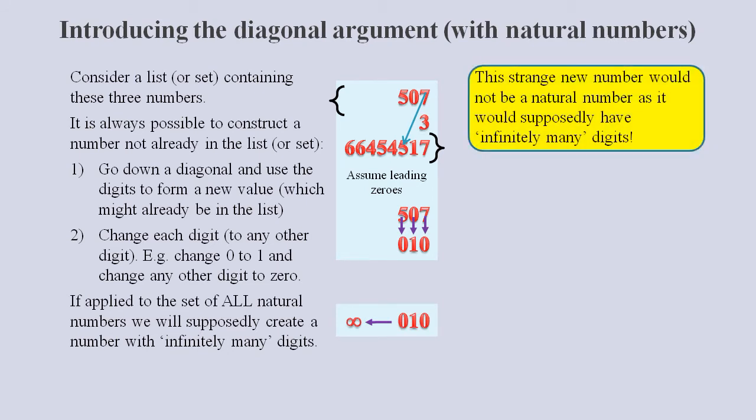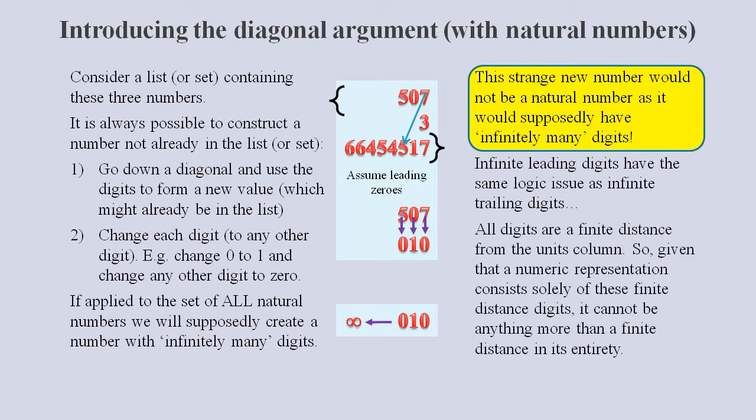To a disbeliever, the concept of infinitely many leading digits is as absurd as infinitely many trailing digits or infinitely many decimal places. In that it forms an obvious contradiction because all digits are a finite number of decimal places from the units column and the representation consists solely of these finite distances.